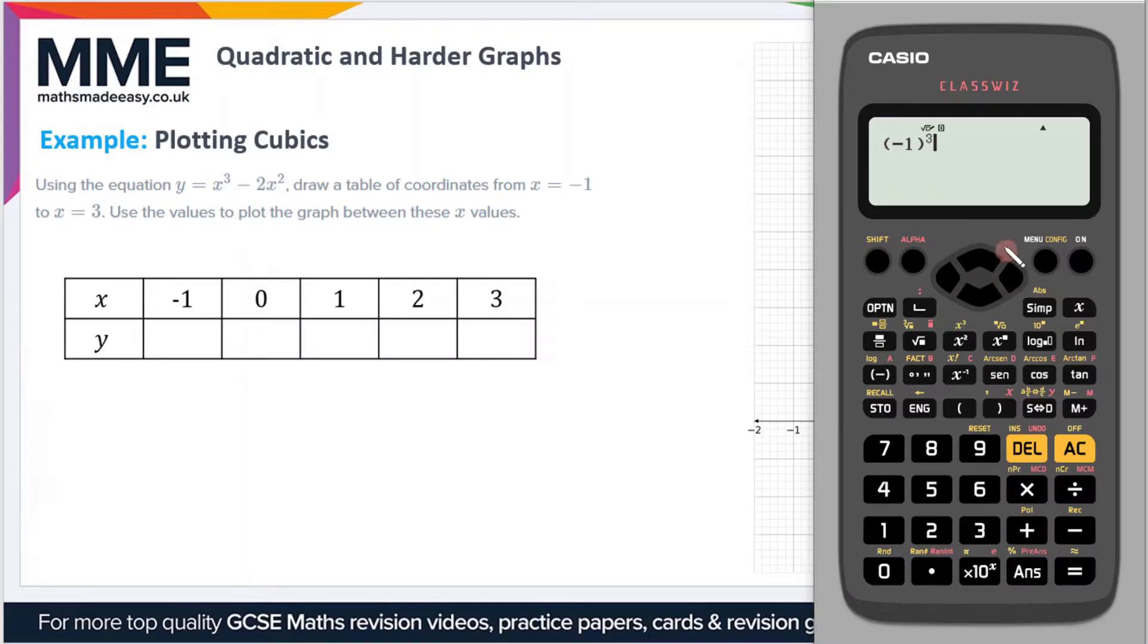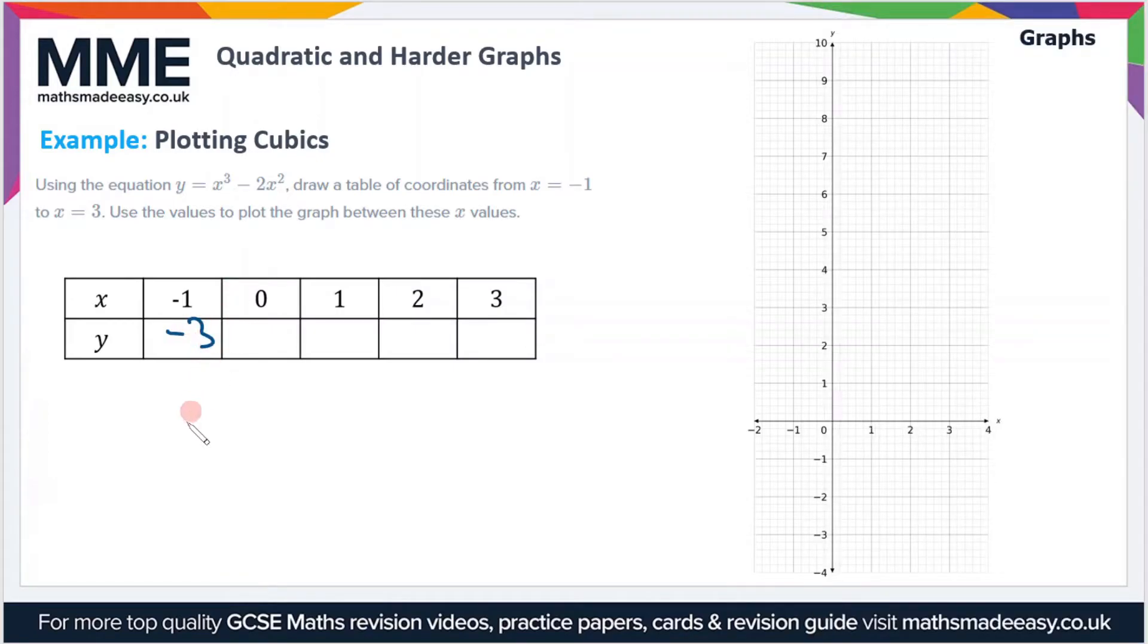Then you just type in the power that you want, so in this case we want 3. Then it's minus 2 times x squared, so again it'll be minus 1 and then we just use the squared button. That gives us a value of minus 3.